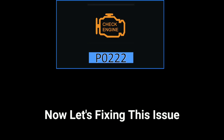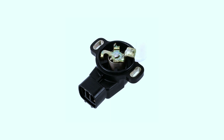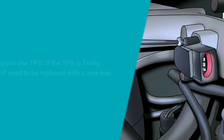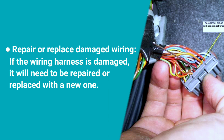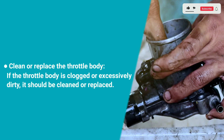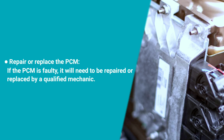Fixing code P0222: the specific repair procedure will depend on the underlying cause. Here are some general guidelines. Replace the TPS if it is faulty. Repair or replace the wiring harness if it is damaged. Clean or replace the throttle body if it is clogged or excessively dirty. Repair or replace the PCM if it is faulty — this should be done by a qualified mechanic.